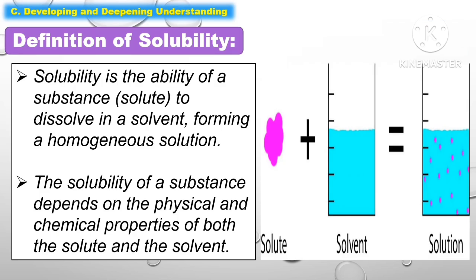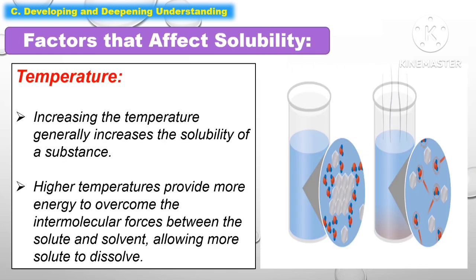In developing and deepening understanding, we first need to define what solubility is. Solubility is the ability of a substance or solute to dissolve in a solvent, forming a homogeneous solution. The solubility of a substance depends on the physical and chemical properties of both the solute and the solvent. The following are the factors that affect solubility.